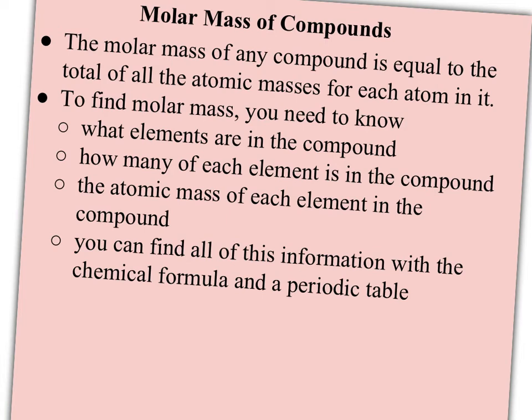The other thing we need to talk about with compounds and moles is you can also come up with what's known as the molar mass of a compound. And the molar mass of a compound is the mass of 1 mole of that particular compound. So you need to add up the atomic masses of each atom in it times the total of how many of those atoms are in it. So to find molar mass, you need to know what elements are in the compound, how many of each element is in the compound, and the atomic mass of each element. And the nice thing is you can find all this information with the chemical formula, which you should be good at writing by now, whether it's covalent or ionic, and your handy-dandy periodic table.